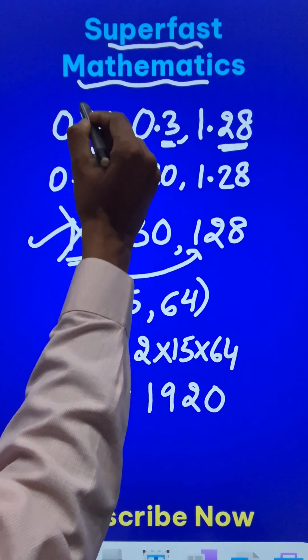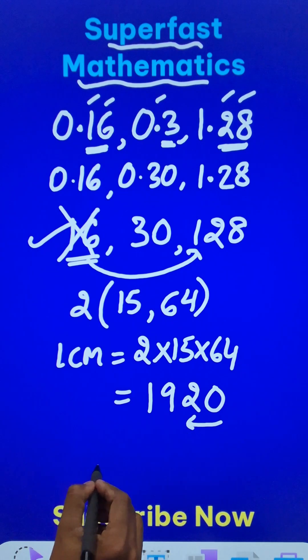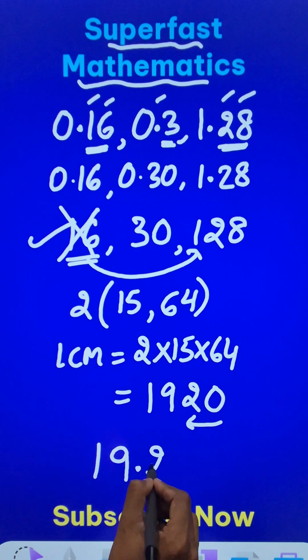Now because all the numbers had two decimal places, we need to put a decimal two digits from the right hand side and therefore your answer for the given question will be 19.20 or simply 19.2.